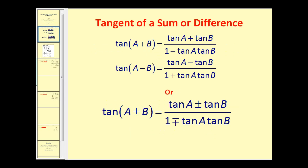To find the tangent of a sum or difference, we use one of these identities. The tangent of the sum of two angles equals tangent A plus tangent B divided by one minus tangent A times tangent B. For the difference of angle A and angle B, the numerator is a difference and the denominator is a sum. We can combine these into one identity using a plus-or-minus sign for the two angles, a plus-or-minus sign in the numerator, and a minus-or-plus sign in the denominator.